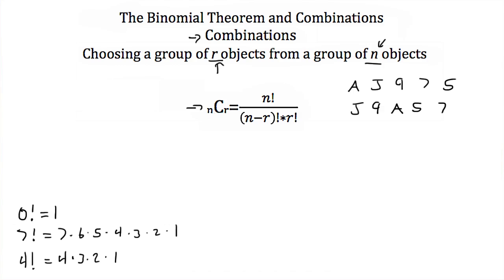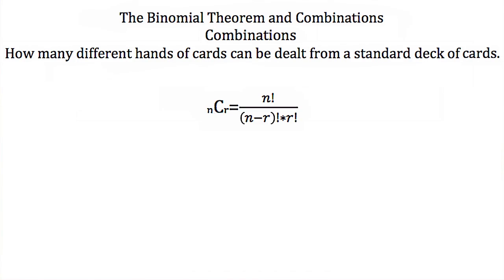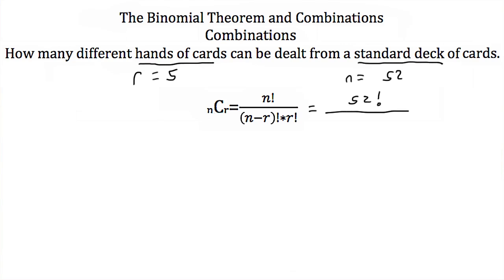Now let's try an example. Let's find how many different hands of five cards can be dealt from a standard deck of 52 cards. Our n is 52 and we're choosing r equals five. So we plug 52 for n and five for r into the formula: 52 factorial over 52 minus 5 factorial multiplied by 5 factorial.